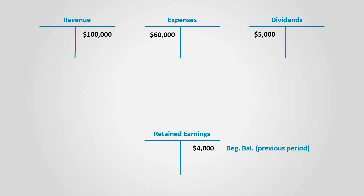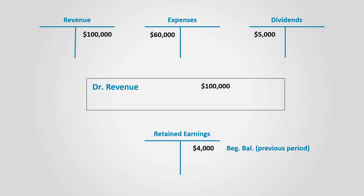Let's explain that in the form of accounts. Assume that we have one revenue account with a credit balance of $100,000, an expense account with $60,000, a dividends account with a debit balance of $5,000, and retained earnings with a credit balance of $4,000. To close the revenue, its balance must equal zero. To do this, it should be debited by its balance of $100,000, and since revenue increases retained earnings, retained earnings is credited by the same amount.